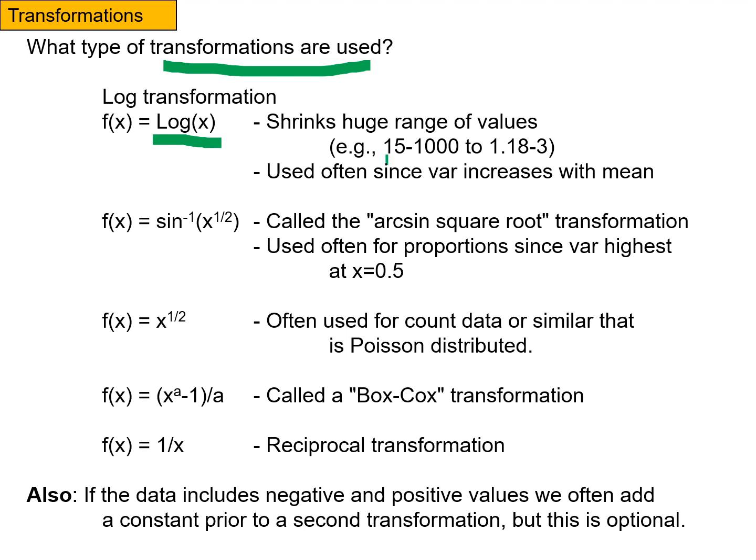So if you have a bunch of values from 15 to 1,000, taking the log base 10 would shrink them down into values from 1.18 to 3. And this is used quite often because the variance often increases with the mean, and taking the log transformation will equalize variances when means are different.